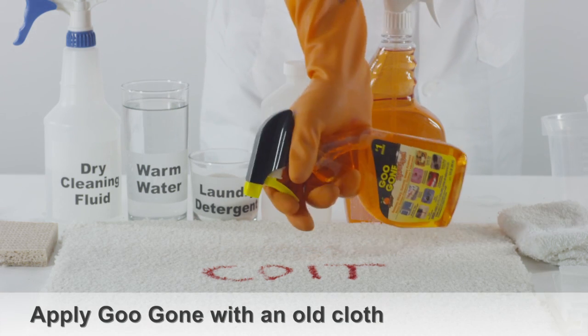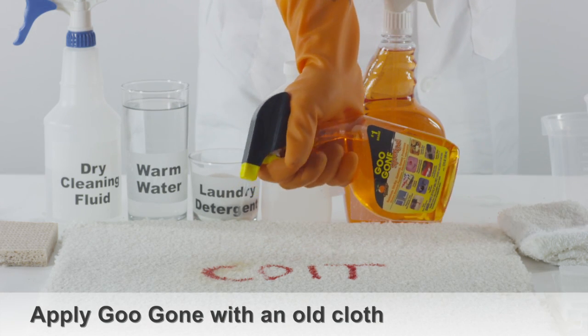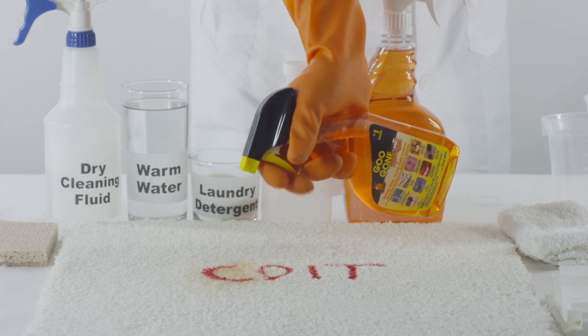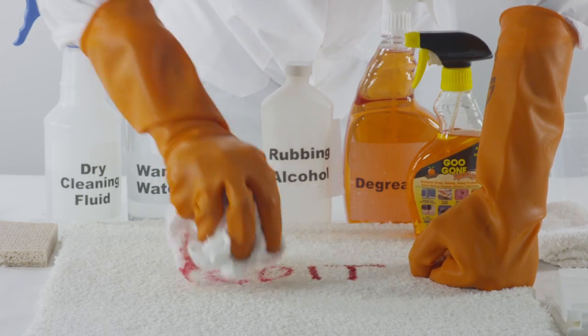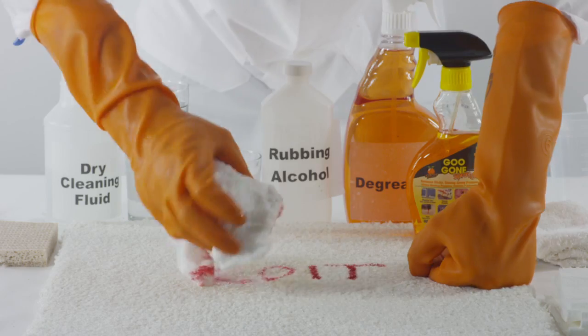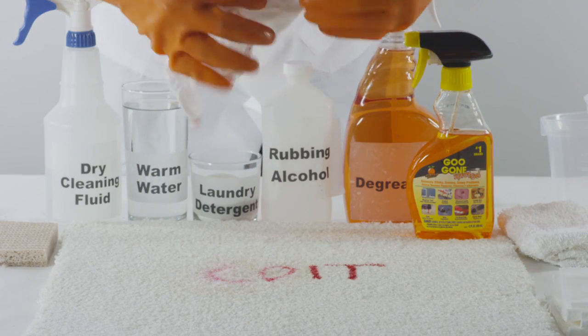With an old cloth, apply Goo Gone, a common degreaser, directly onto the lipstick stain and press into the carpet. You'll start to see the lipstick stain come off the carpet and onto the cloth.